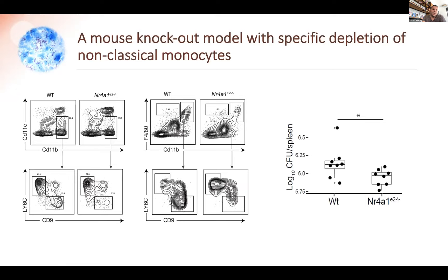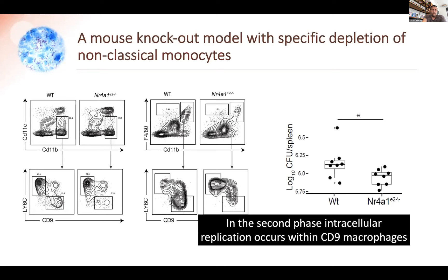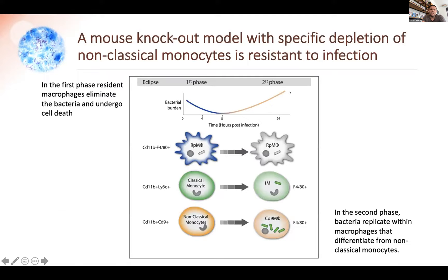Looking at CFU of Salmonella in these mice, Salmonella replicates less in the NR4A1 super enhancer knockout mice. This shows that Salmonella needs these cells to establish an intracellular niche in the second phase of the eclipse. Our model is: in the first phase, red pulp macrophages contain intracellular bacteria but die at eight hours. Classical monocytes do not seem to play a significant role. The non-classical monocytes — the CD9 macrophages arising from them — are the intracellular niche for Salmonella in the second phase, with Salmonella coming out of red pulp macrophages being taken up by CD9 macrophages.